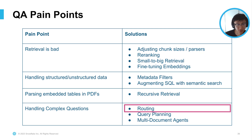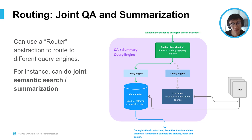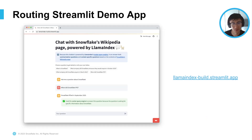The next pain point is handling complex questions. We have a Streamlit demo for this — thanks to Carolyn on the Streamlit team for helping create it. Routing is simply a multiple-choice picker: given a question, it figures out which underlying choices that question maps to. We can use a router abstraction to route to different query engines within Llama Index. This dynamic selection capability allows you to do stuff like joint semantic search and summarization — you can have a unified interface that can handle both summarization requests and questions about specific parts of a document.